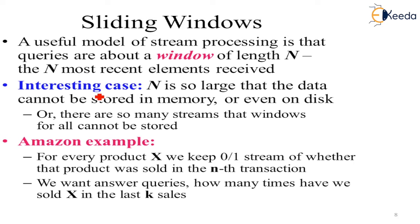Let's take an example of Amazon. For every product X, we keep 0 by N streams of whether that product was sold in the Nth transaction. How much time back the data has been sold out? We want to answer queries: how many times have we sold X in the last K sales? Suppose there is product X, and in the last 100 sales, how many times we sold X? Does it have some demand or not? Amazon has to take this decision. Unnecessarily Amazon cannot keep all the products. It is very simple.